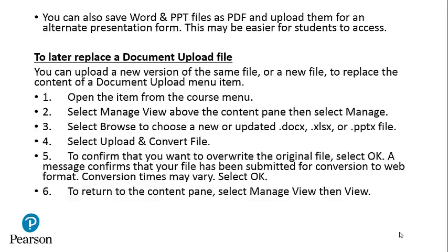Again, open the item from the course menu. Select Manage View above the content page, then select Manage. Choose the new or updated DocX, XLSX, or PPTX file. Select Upload and Convert. To confirm that you want to override the original file, select OK. The message will confirm that your file has been submitted for conversion to web format. Conversion times may vary. Select OK. To return to your content page, select Manage View, then View.